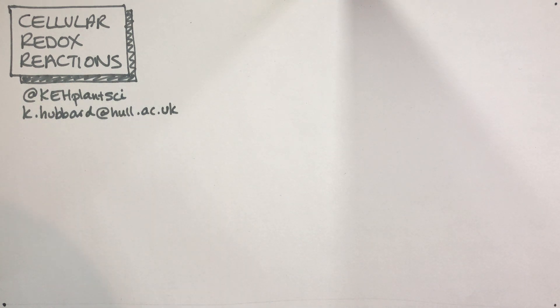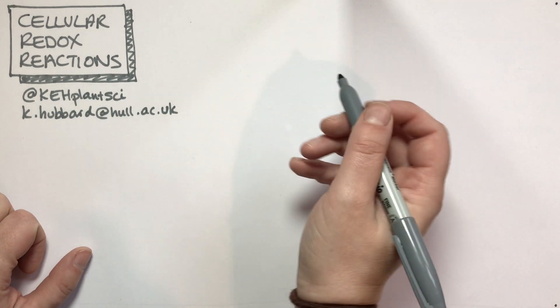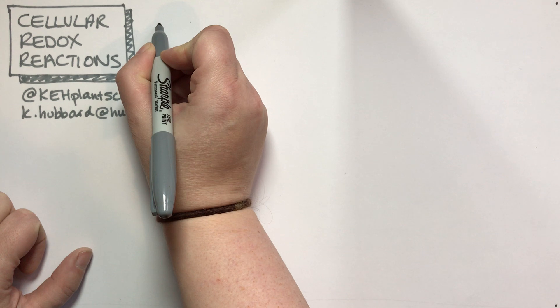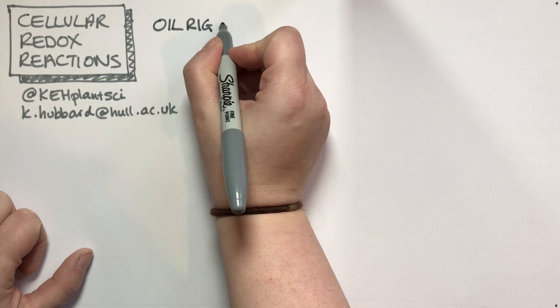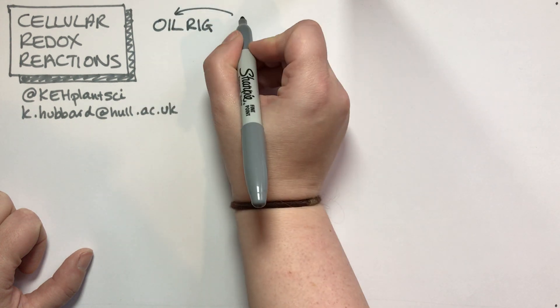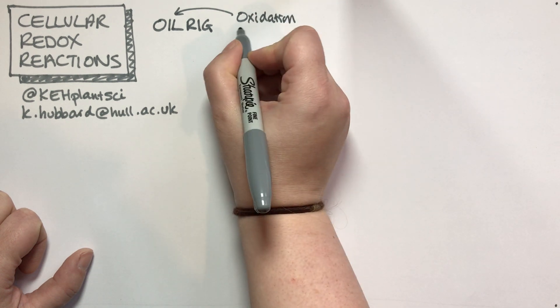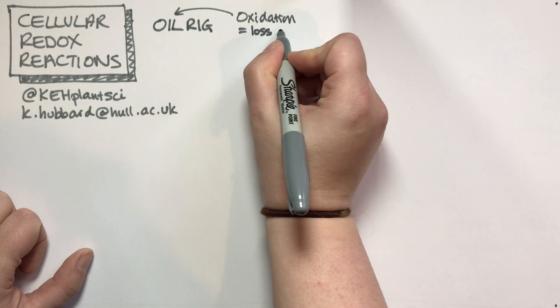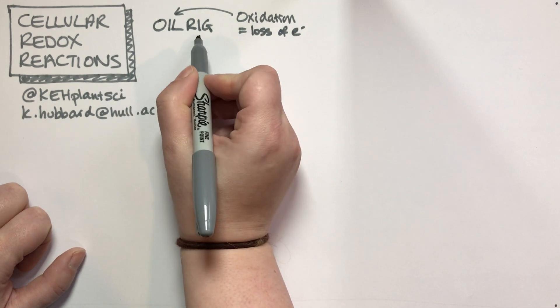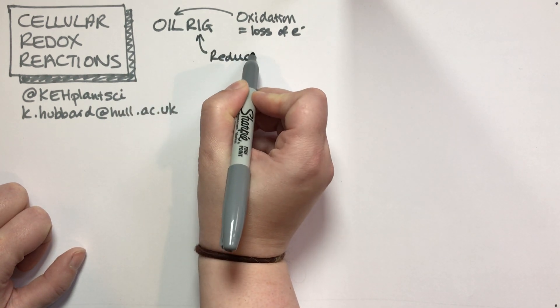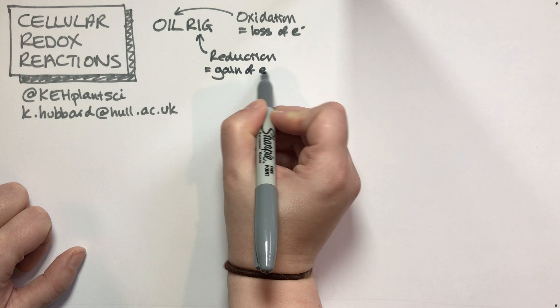Redox reactions are all about the transfer of electrons. You might remember from school chemistry the acronym OIL RIG to help you remember this. OIL refers to oxidation, which is a loss of electrons (E-). RIG refers to reduction, which is a gain of electrons (E-).